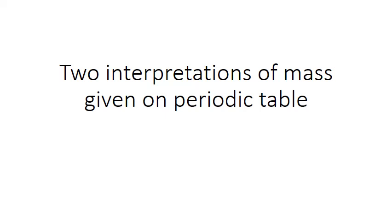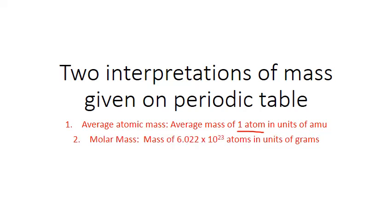This leads us to an important fact about the average atomic mass values given on the periodic table. They can be interpreted in two ways depending on the units we use. First, in units of amu, they represent the average atomic mass of one atom of that particular element. But they can also represent the mass in grams of one mole or 6.022 times 10 to the 23rd atoms of that element. When we're dealing with units of grams associated with that number, we call it the molar mass.